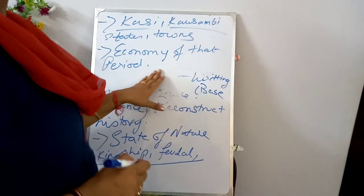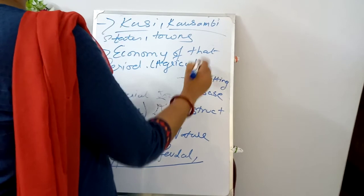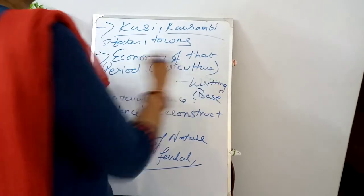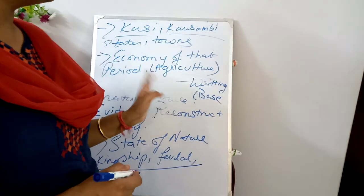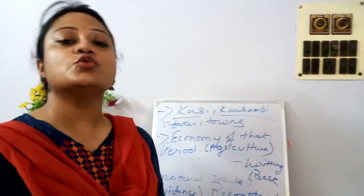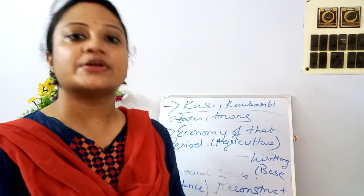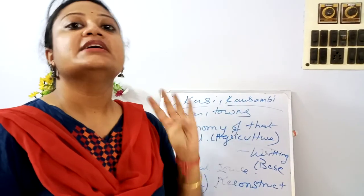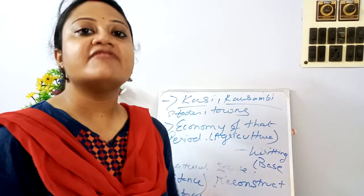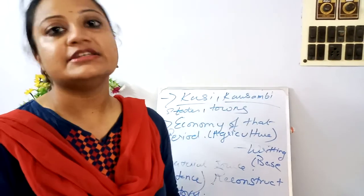We also get good knowledge of the economy of a particular period from written sources of history, and how agriculture at that particular point of time contributed to the economy. So today we have learned what is history, what are the two types of history — that is proto-history and prehistory — how the proto-history period existed in India, and why written historical evidences are essential for writing history.